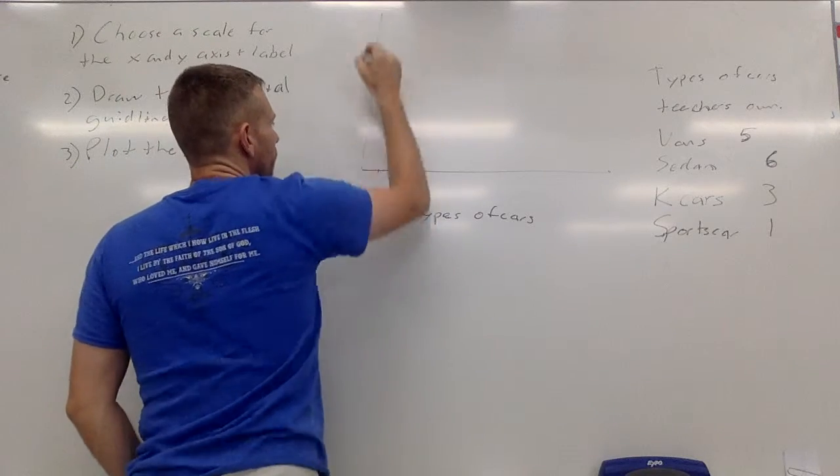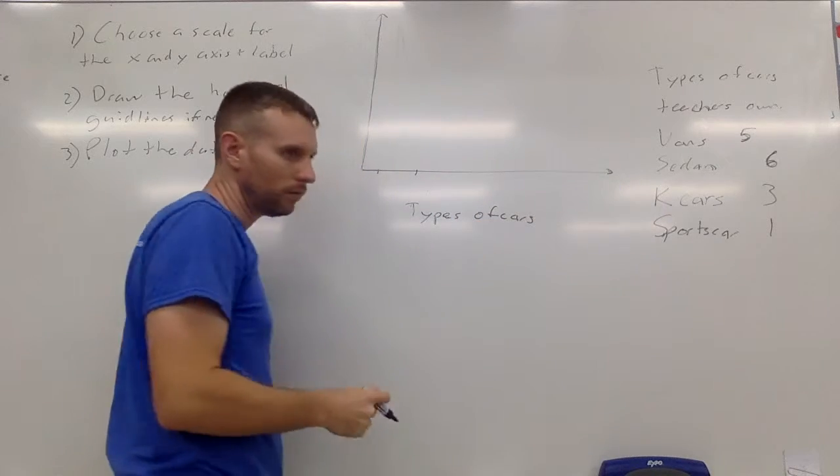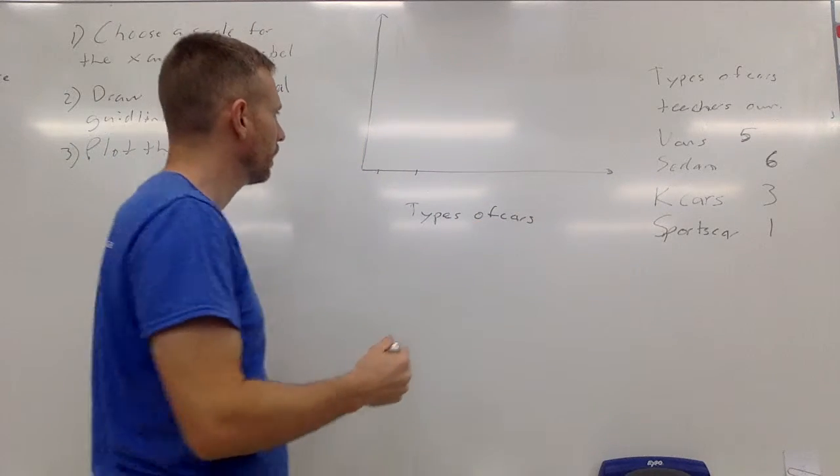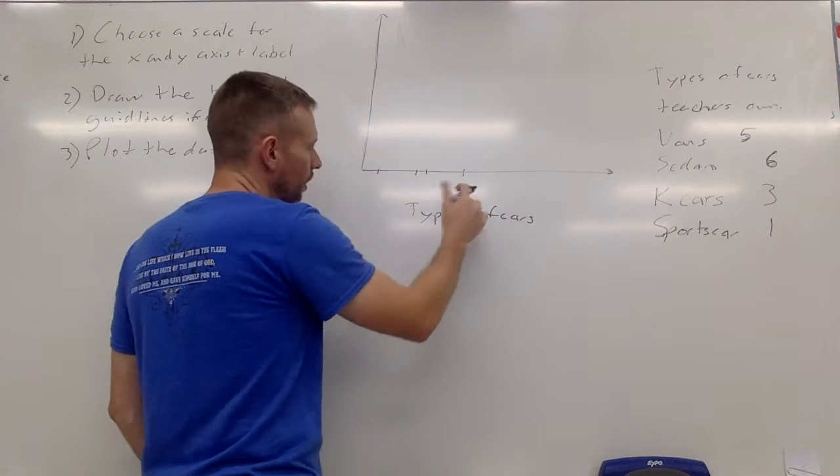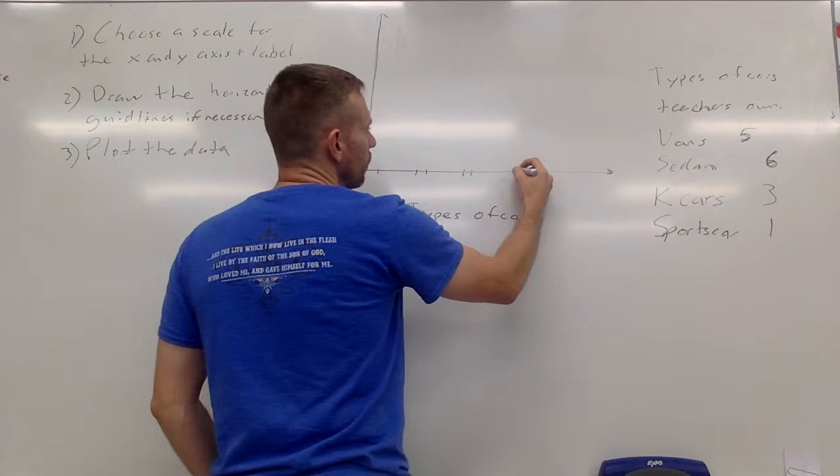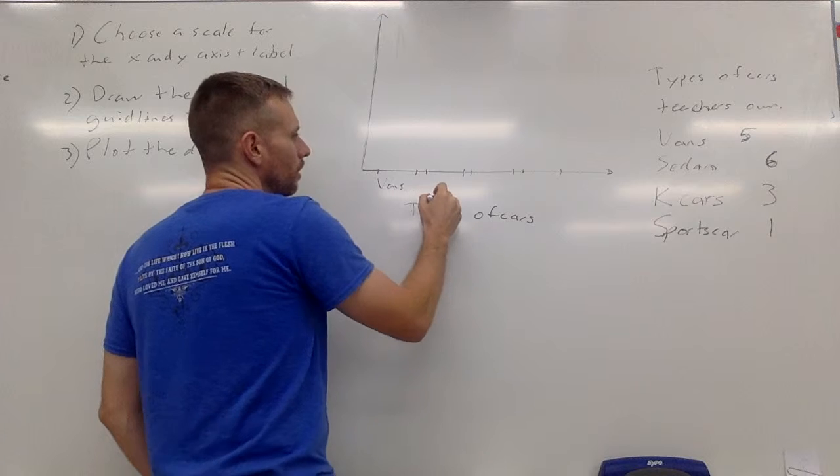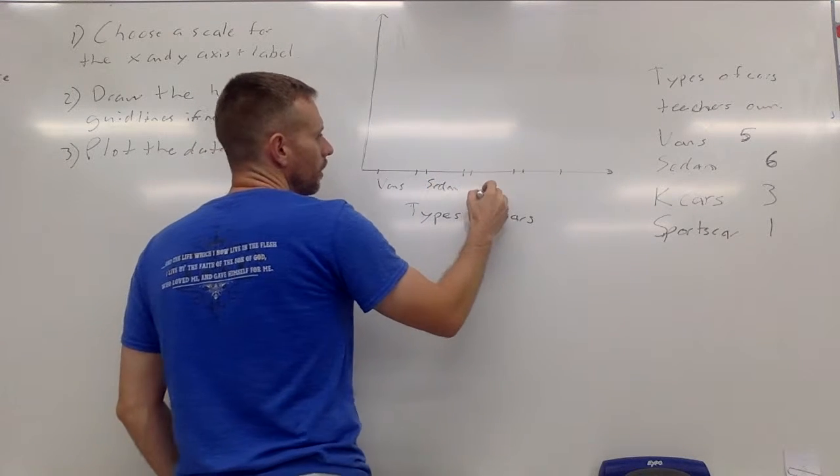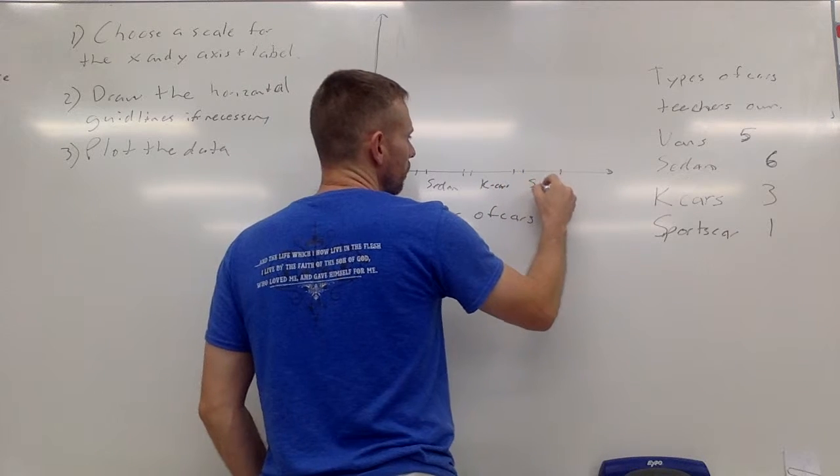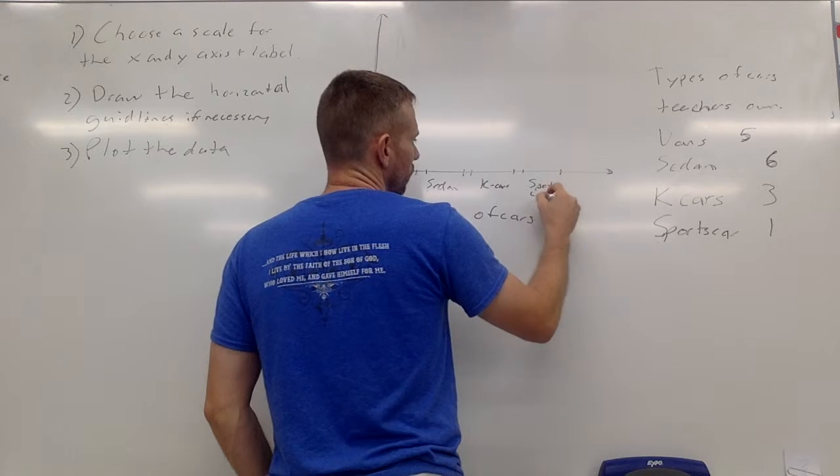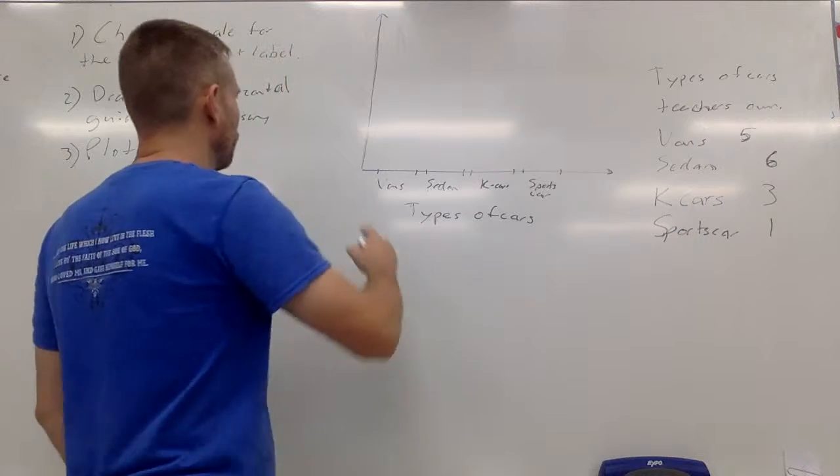My y is going to go up here. In a bar graph there is a space between the bars, so in a histogram they are connected but in a bar graph there's going to be a space. Use your ruler to space these out. These are going to be the vans, sedan, K cars, and the sports cars.